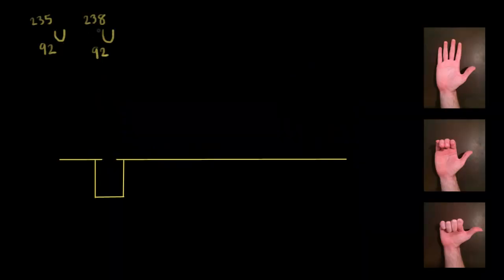Uranium consists of two major isotopes: uranium-235 and uranium-238. If you wanted to separate the two isotopes from each other, one way to do it is to use a mass spectrometer. A variation of this was done in World War II to separate uranium isotopes. You can separate them because they have different masses — uranium-238 has more neutrons than uranium-235, and so therefore it has more mass.